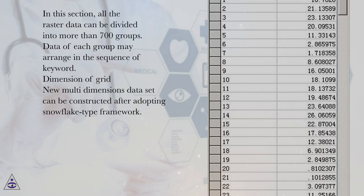In this section, all the raster data can be divided into more than 700 groups. Data of each group may arrange in the sequence of keyword. Dimension of grid.